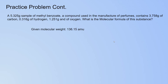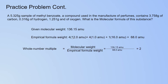Now we're finding the molecular formula for the same problem. The given molecular weight is 136.15 AMU, or 136.15 grams per mole. Find the empirical formula weight: 4 carbon atoms at 12.0 AMU each, plus hydrogen and oxygen, gives a total empirical formula weight of 68.0 AMU. Divide the molecular weight by the empirical formula weight: 136.15 ÷ 68.0 ≈ 2. Multiply the empirical formula by 2: C4H4O × 2 = C8H8O2.